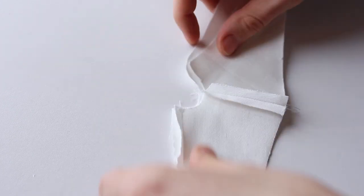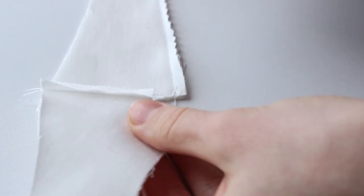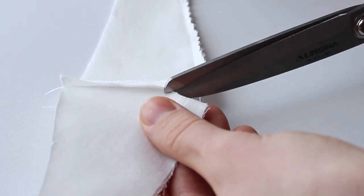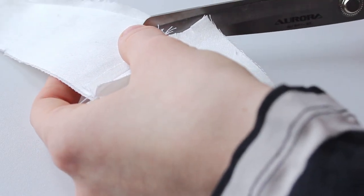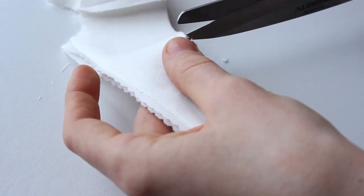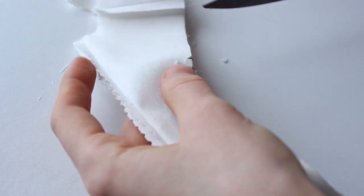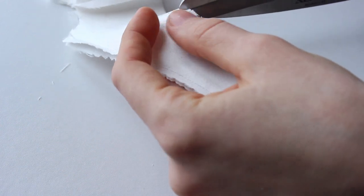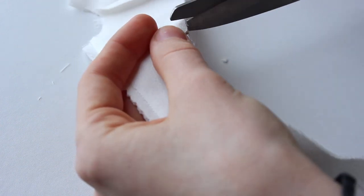Fold this part matching shoulder seams and clip the neck curve. Be careful not to snip through where the stitch line is going to be. Repeat the same process for the bust area. Make a couple of notches on both sides of bust marking.